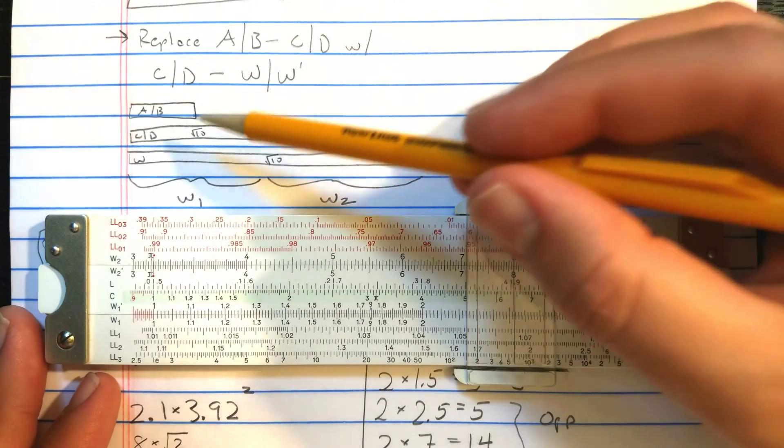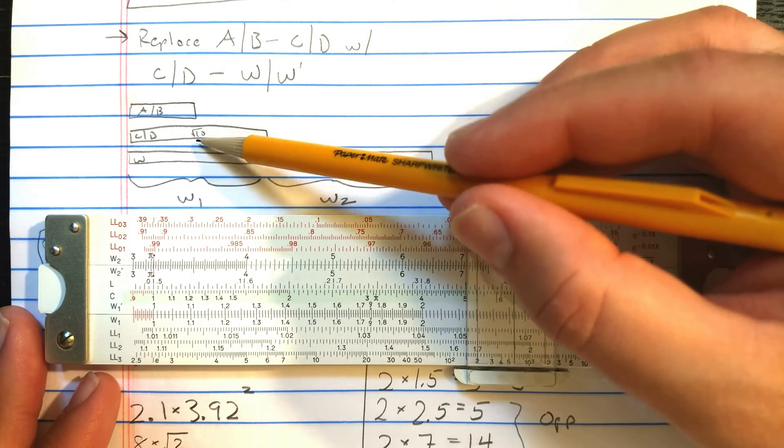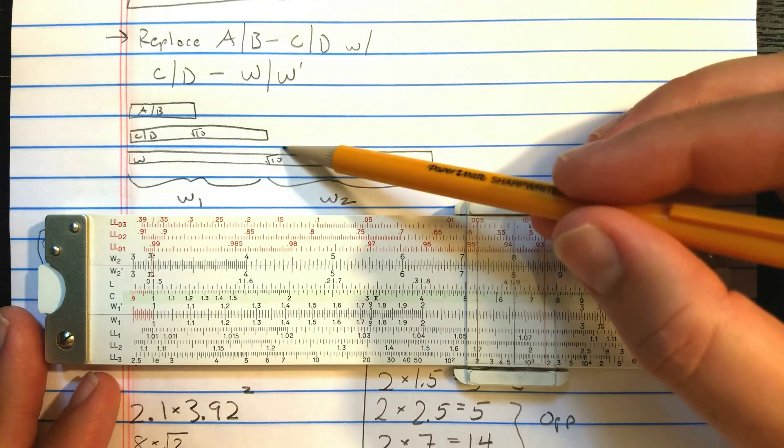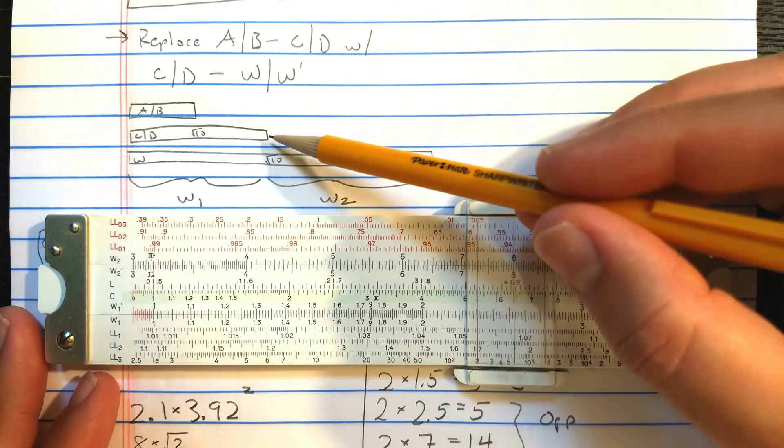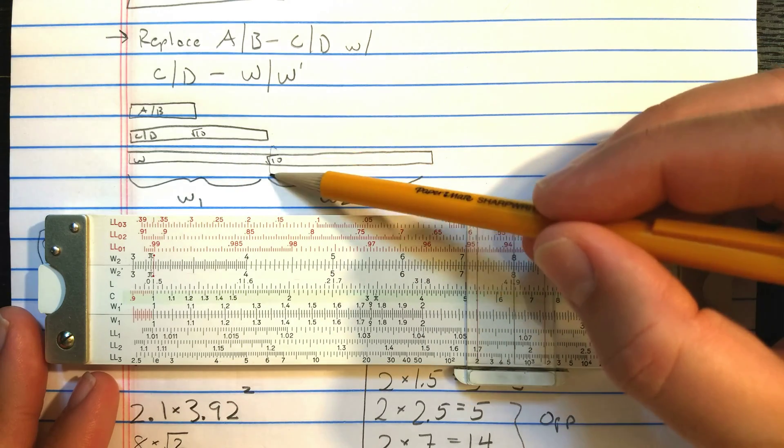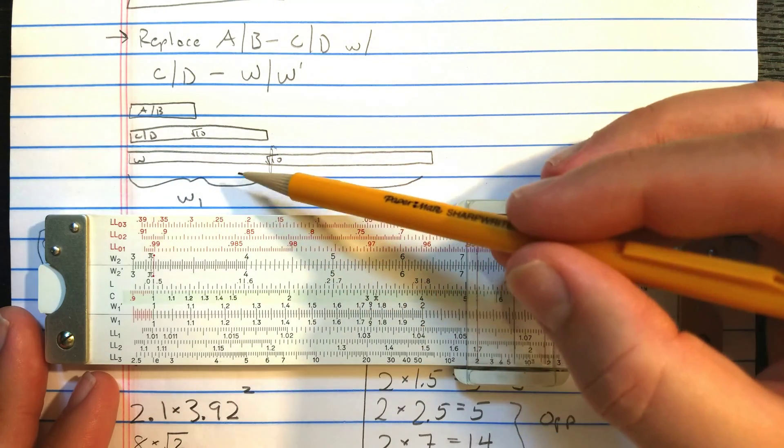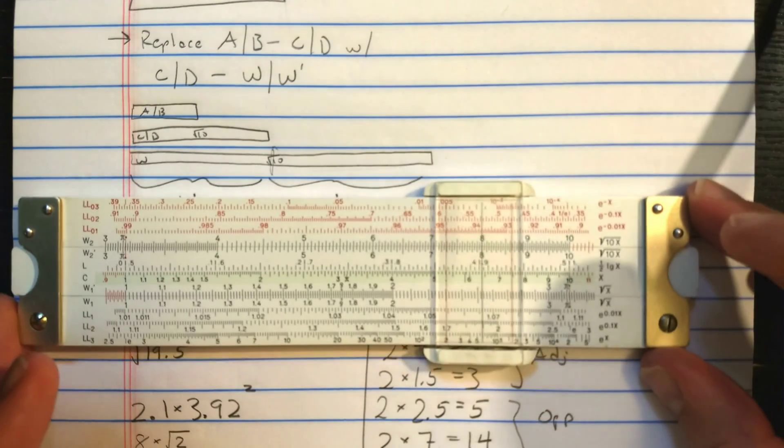Okay, so the middle of the C, D scale here is the number square root 10. The middle of the W scale would be square root 10. But of course, our slide rule is only this long. So we cut here, that's square root 10. The first half is called W1, the second half is called W2, and that's how these scales are made.